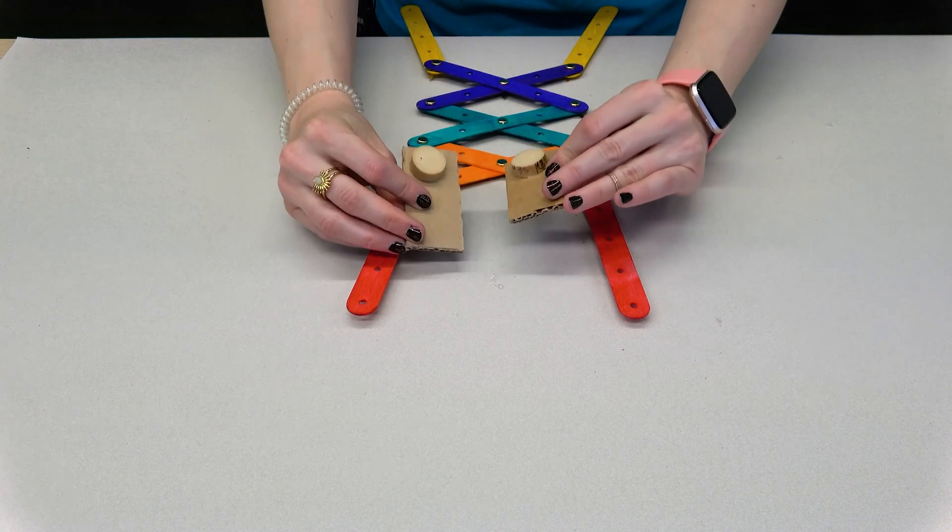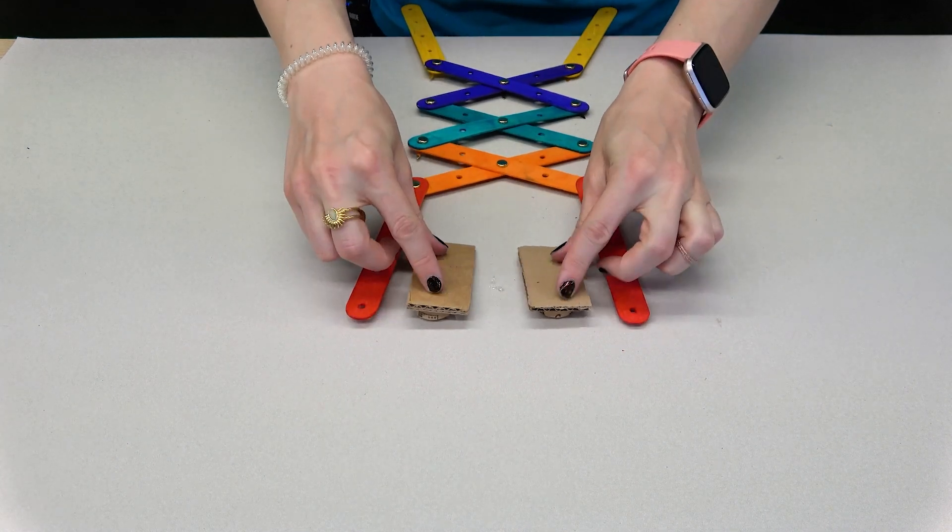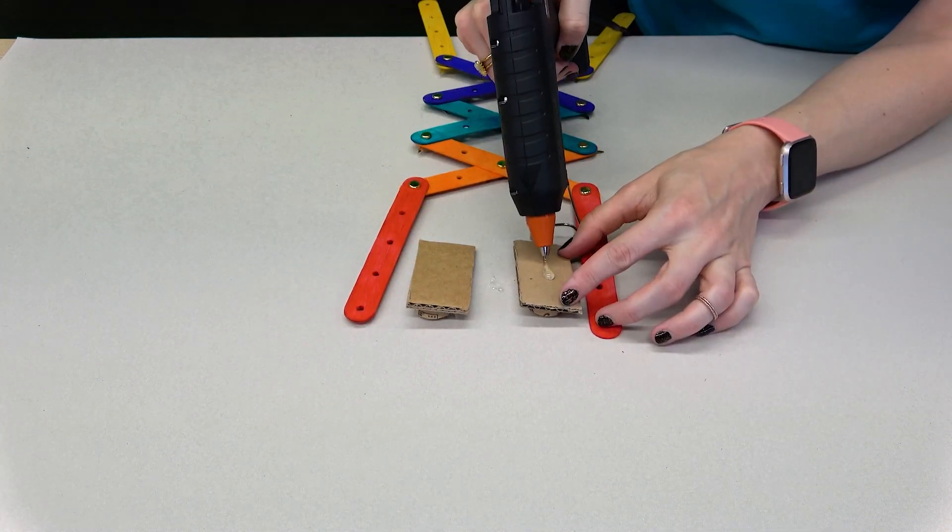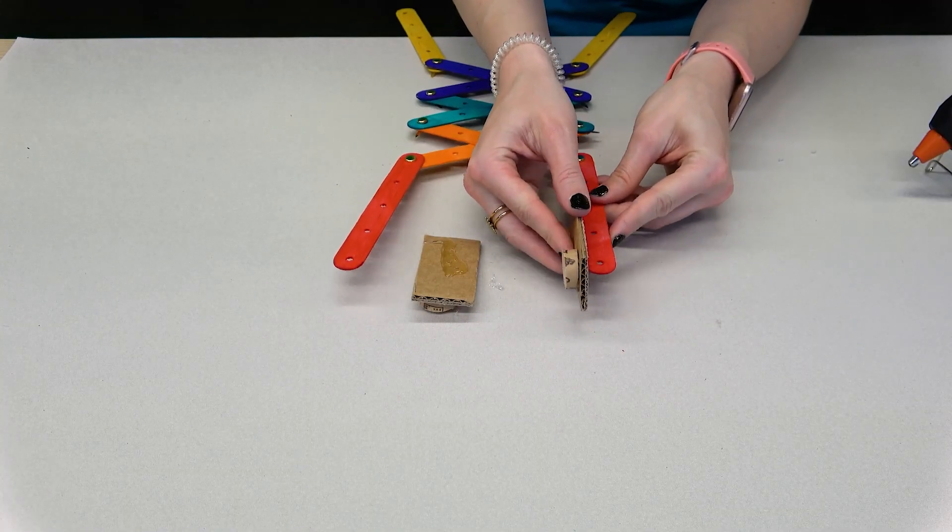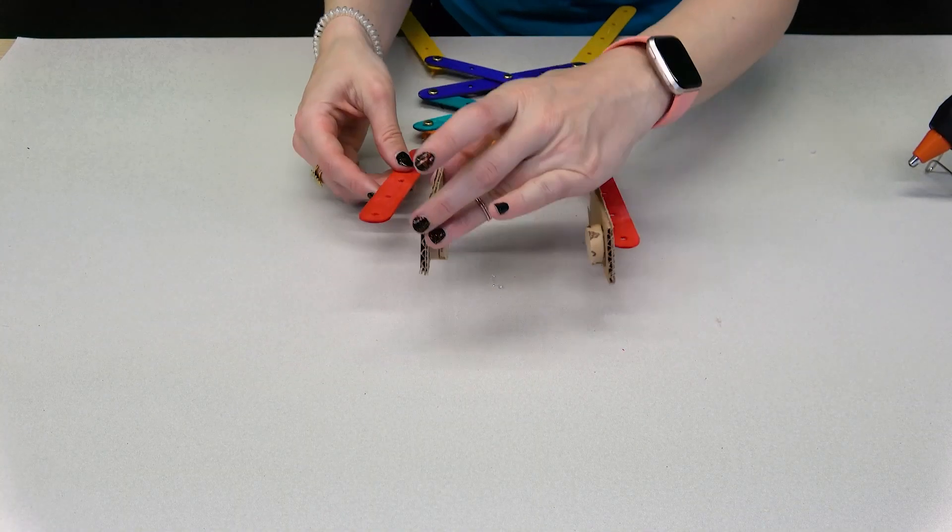Use the hot glue gun one last time to glue the cardboard to the tip of the robotic arm. The cork slices should face each other.